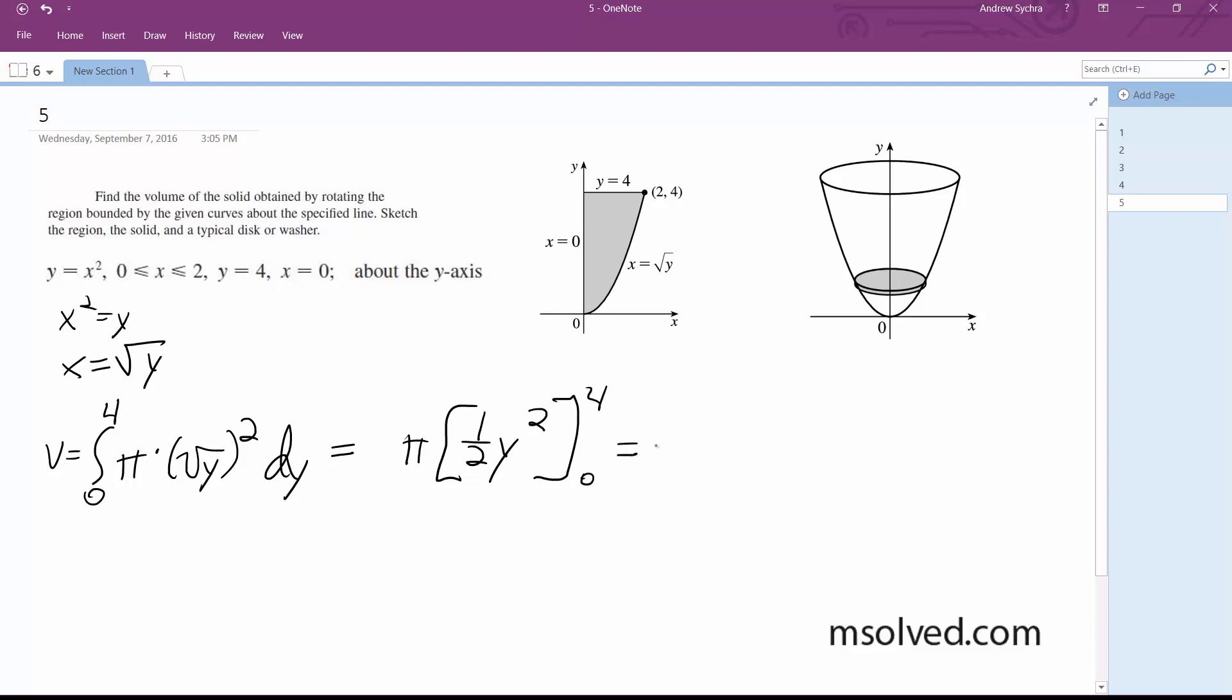And what we get is 16 times, so pi times 16 times one half, which is 8, minus 0.